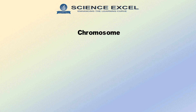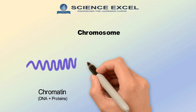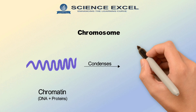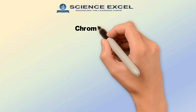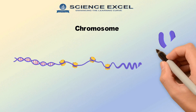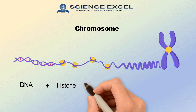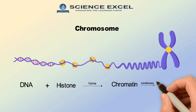Now let's see what is a chromosome. The chromatin structure in the form of tangled threads condenses to form the chromosomes. In simple words, DNA with histone protein forms the chromatin, while the same chromatin condenses to form the chromosome.